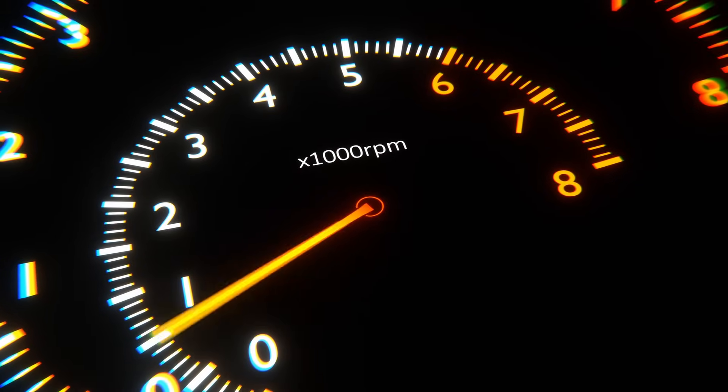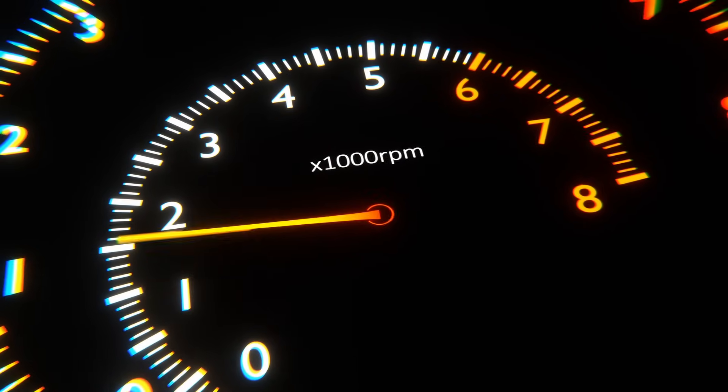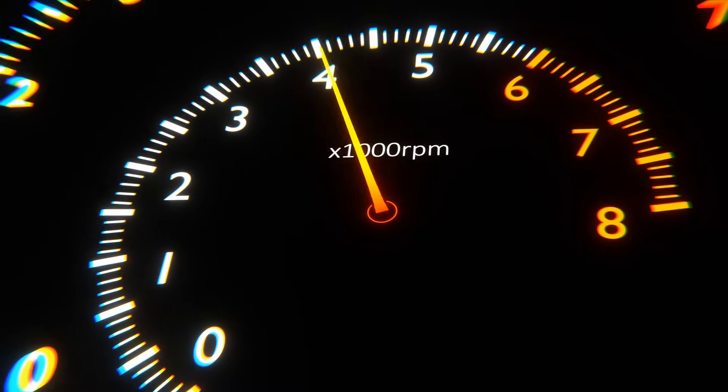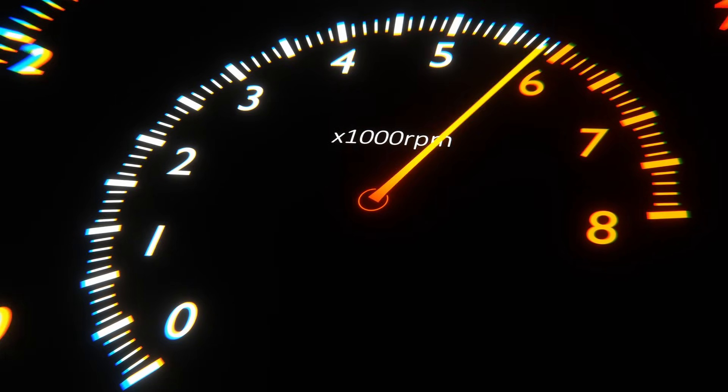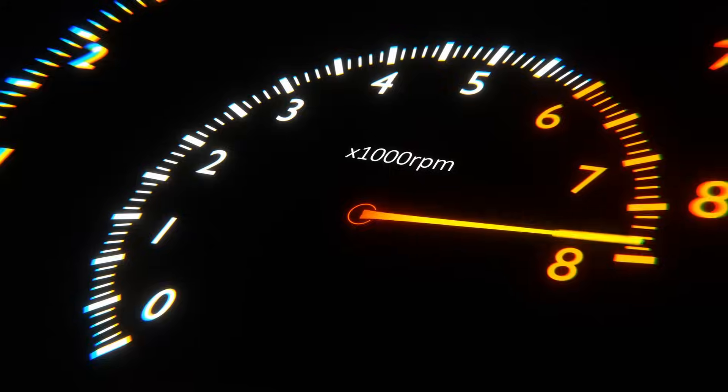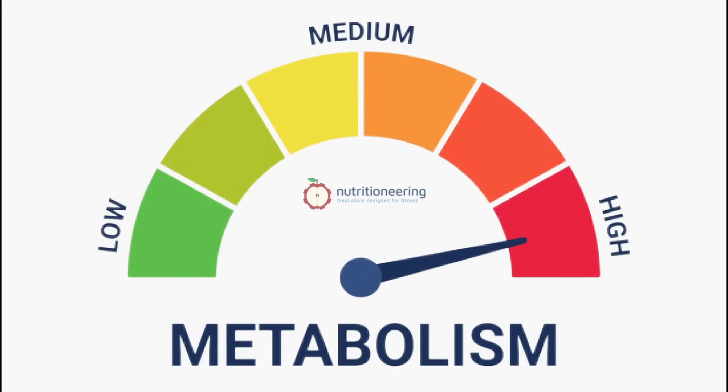You could think of metabolic rate as your body's unique engine speed. It can rev high, idle low, or cruise somewhere in between. Metabolic types are just different categories on this energy spectrum.